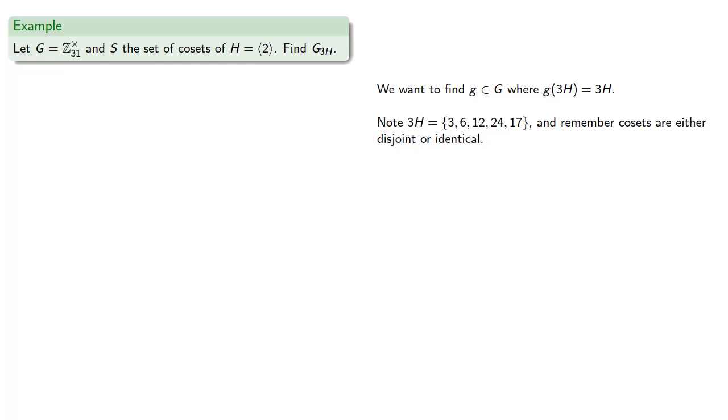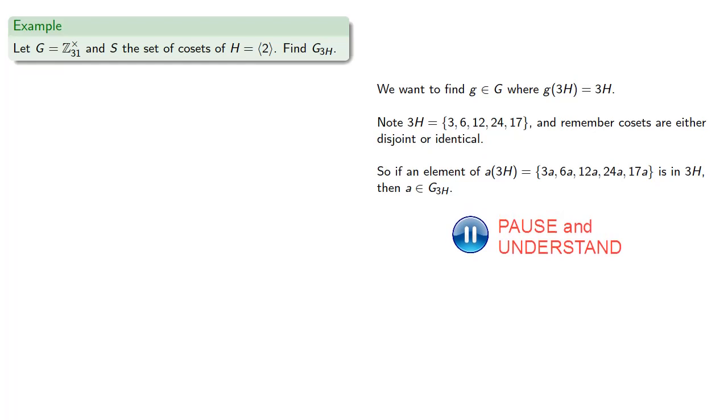And so if an element of A applied to 3H, which is to say this set is already in 3H, then A is going to be an element of the stabilizer. So let's consider, maybe 3A is this first element 3, in which case A is 1, and so 1 is an element of our stabilizer.